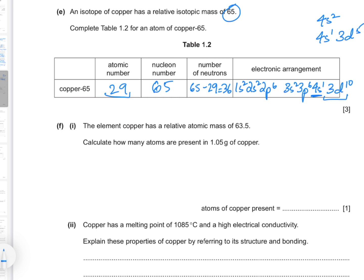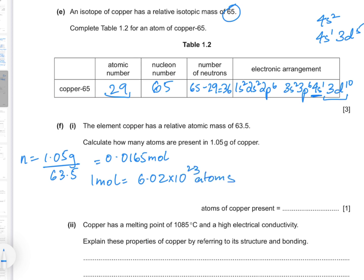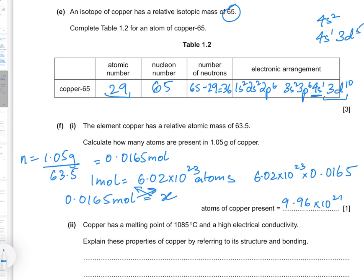Part f: Copper has a relative atomic mass of 63.5. Calculate how many atoms are present in 1.05 g of copper. The number of moles equals mass divided by atomic mass: 1.05 ÷ 63.5 = 0.01654 mol. Using 1 mol = 6.02 × 10²³ atoms, the number of atoms equals 0.01654 × 6.02 × 10²³ = 9.96 × 10²¹ atoms.